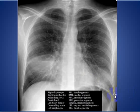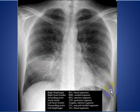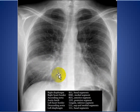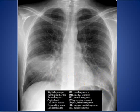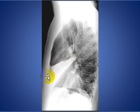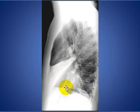Here is a nice example with two opacities. One is obliterating the right cardiac border, and the other is partially obliterating the left hemidiaphragm without obliterating the left cardiac border. The opacity obliterating the right cardiac border is located in the middle lobe medial segment. The opacity obliterating the left hemidiaphragm is located in the basal segment of the left lower lobe, as confirmed on the lateral chest X-ray.